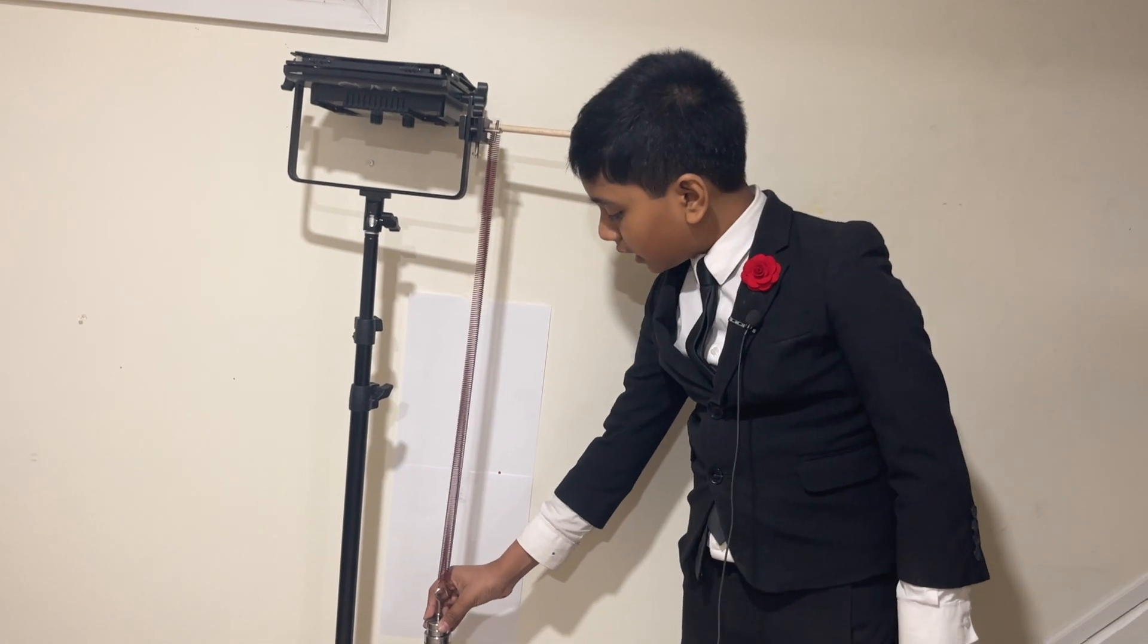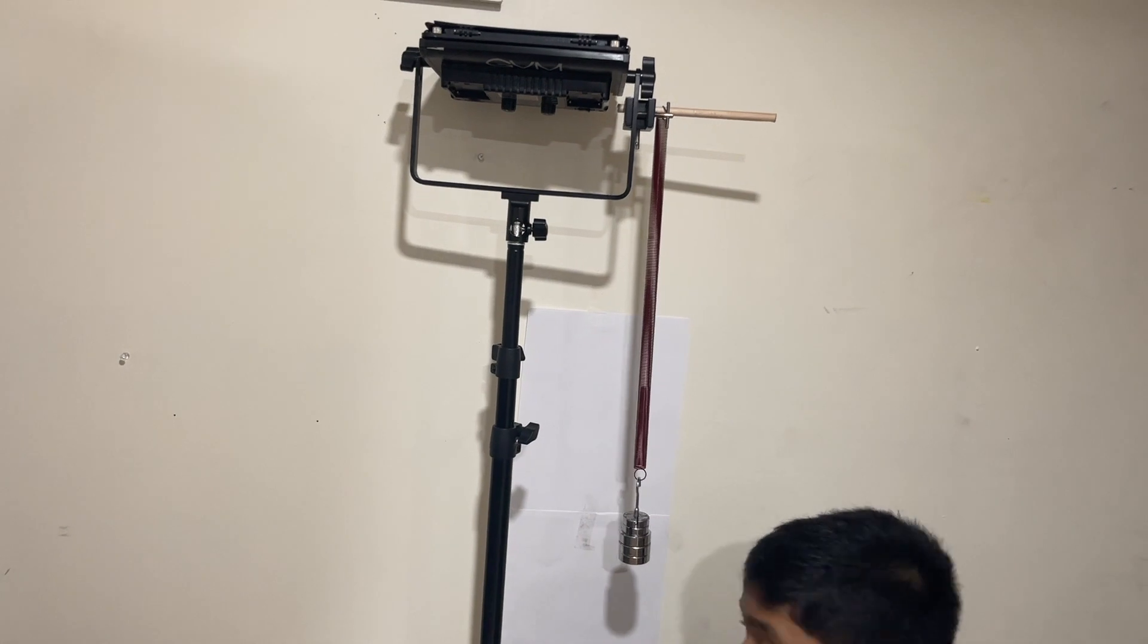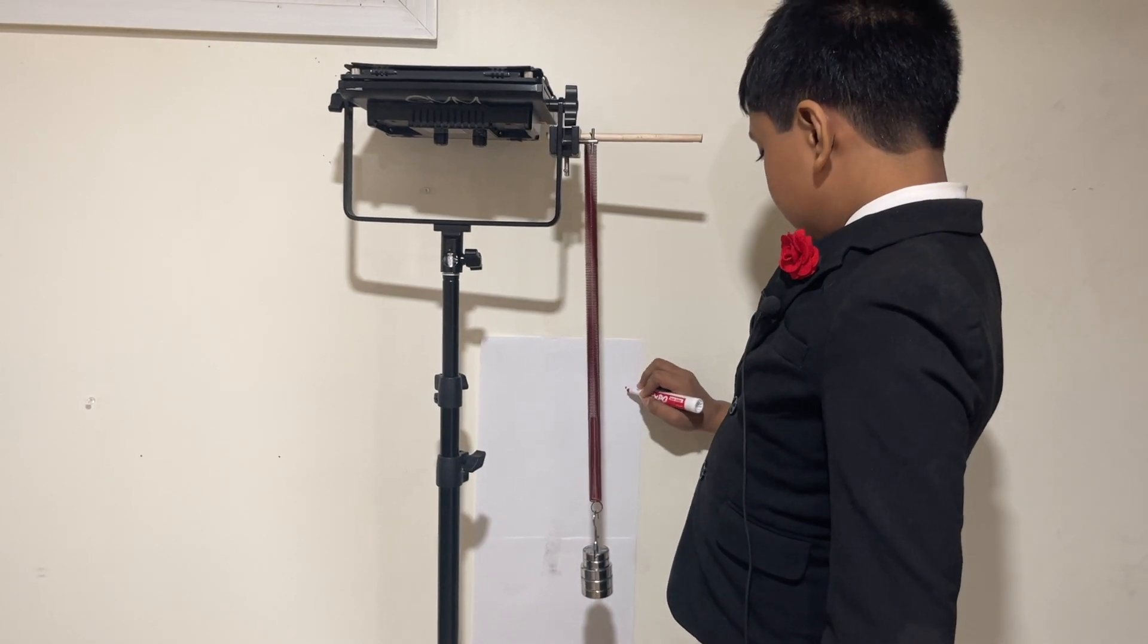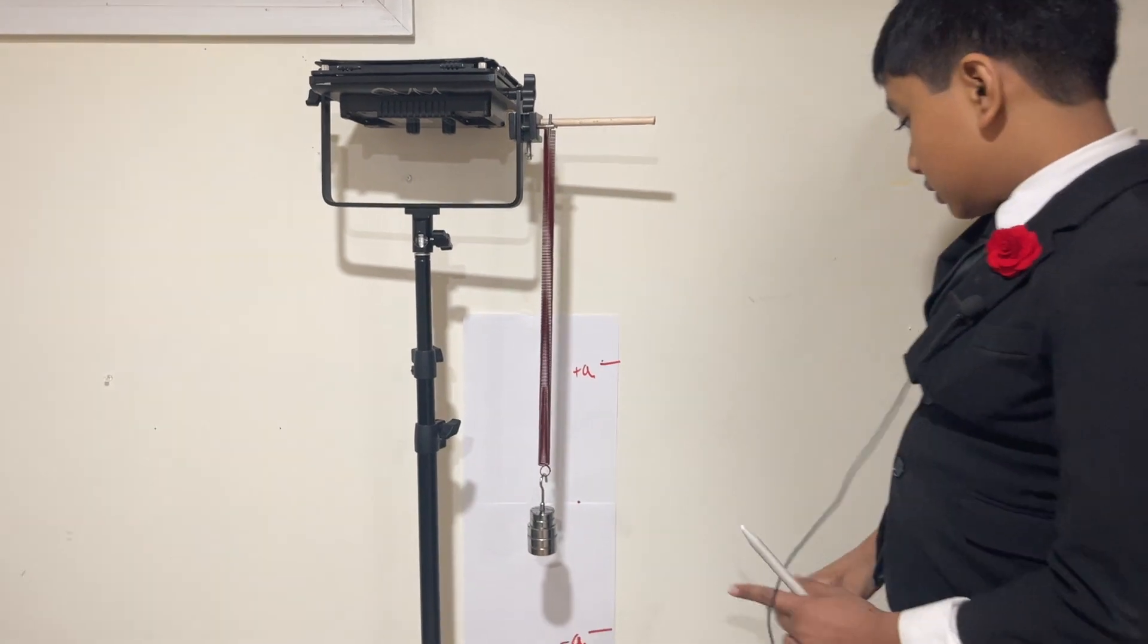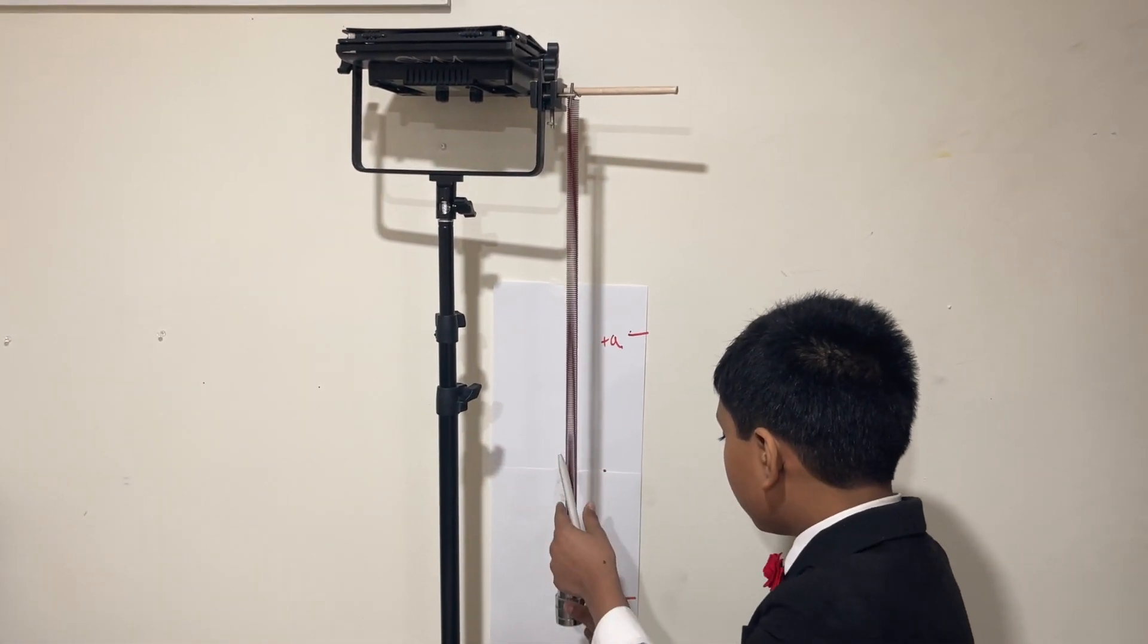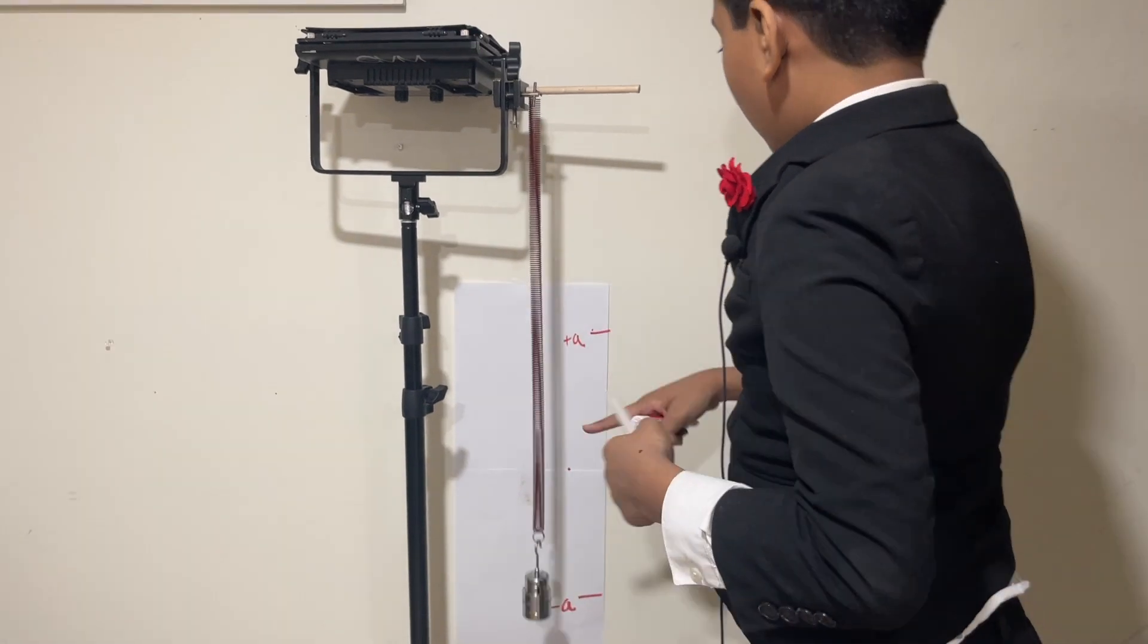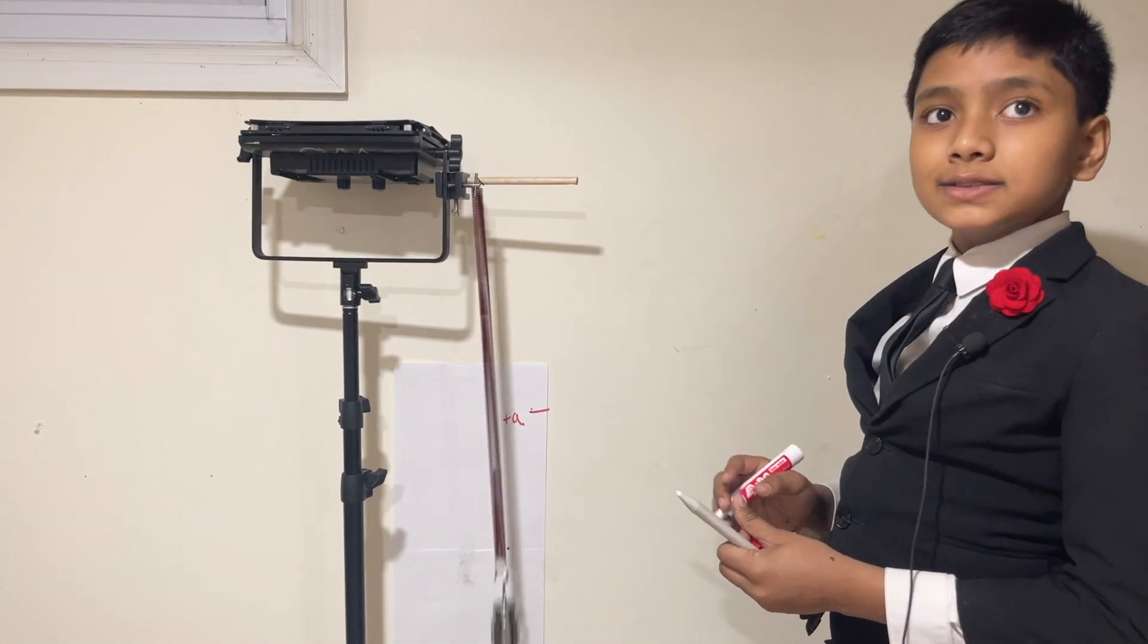If I stretch it downwards like this, it will oscillate to negative a, and then it's hopefully going to oscillate to the same height, and let's call that positive a. I'm going to try stretching the spring down until it gets to negative a. As you can see, it basically oscillates to positive a, although the oscillations get weaker because this is a real spring.